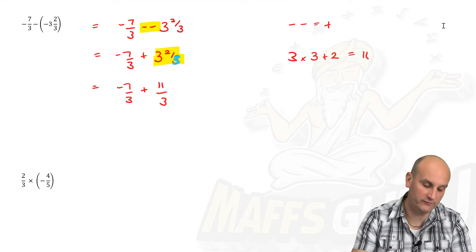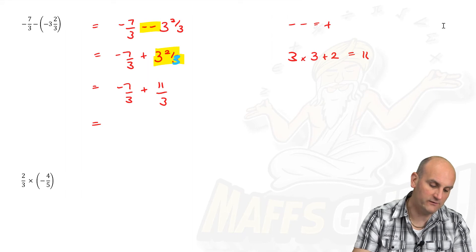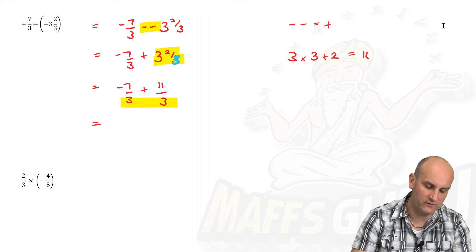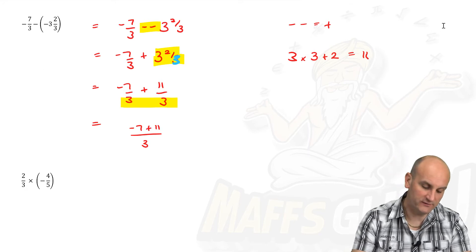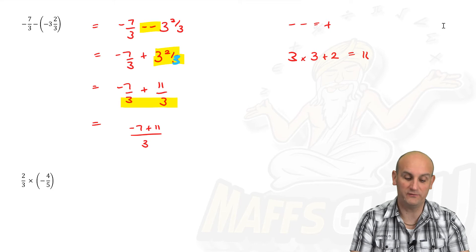Are the denominators the same? They absolutely are. So that all becomes on three. There is minus seven plus eleven. And so what is minus seven plus eleven?